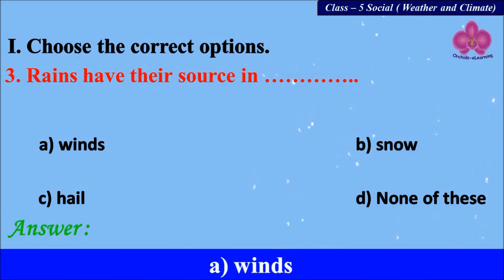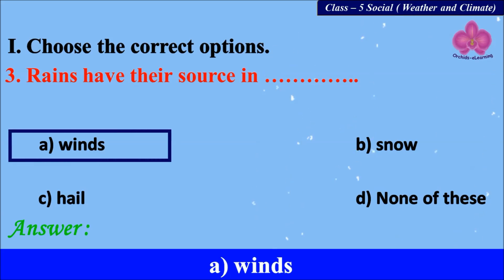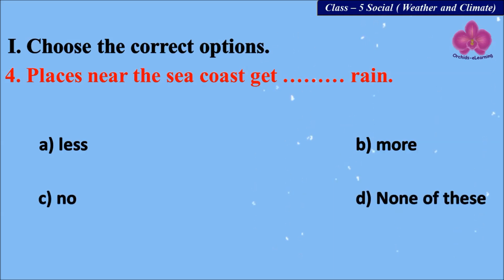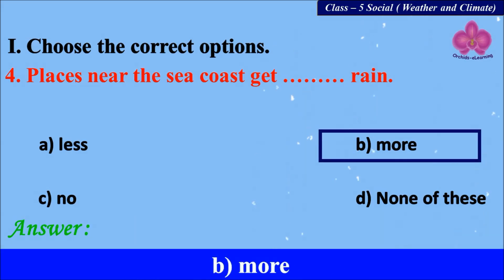The answer is A) winds. Number four: places near the sea coast get dash rain. The options are: A) less, B) more, C) no, and D) none of these. And the answer is B) more.